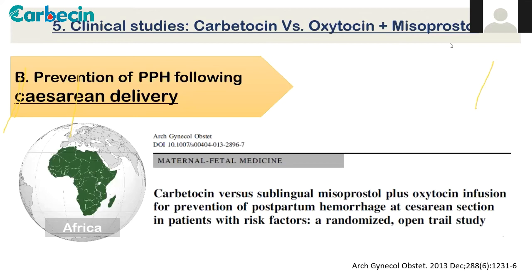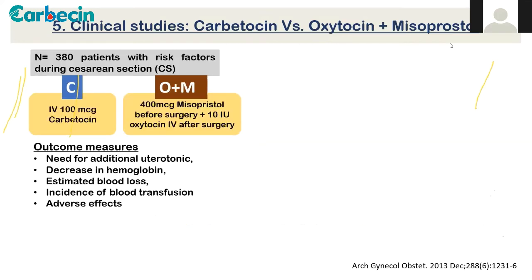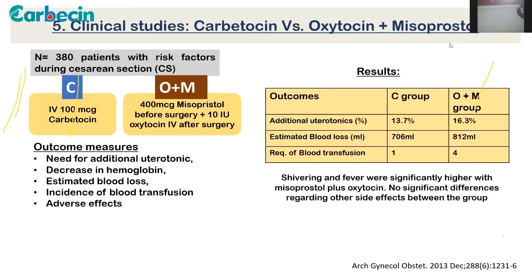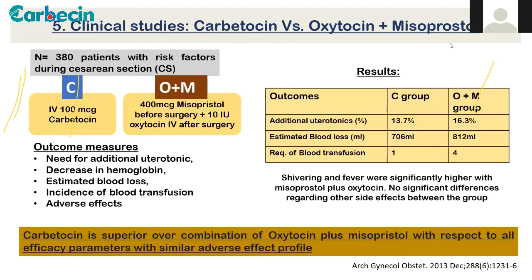Another study — carbetocin versus sublingual misoprostol plus oxytocin infusion for prevention of PPH at cesarean section in patients with risk factors (randomized open trial, 380 patients): carbetocin showed less need for additional uterotonics compared to the combination of oxytocin 10 units IV plus misoprostol 400 mcg preoperatively. Blood loss was not markedly different, but requirement of blood transfusion was more with the oxytocin-misoprostol combination. Shivering and fever were side effects with misoprostol. Carbetocin was found to be even better than the combination.